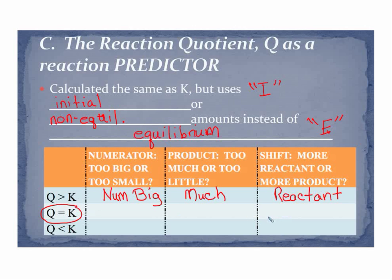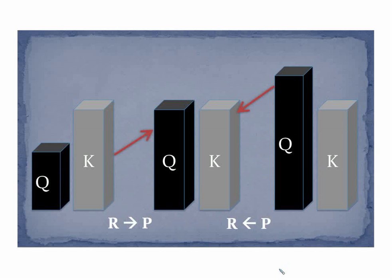If Q is equal to K, that means we are at equilibrium, and there would be no shift. Now, if Q is less than K, that means that my numerator is too small. Or conversely, my denominator is too big. My numerator is too small. I don't have enough product. I have too little product. And so I'm going to shift to make more product. So as the reaction proceeds to reach equilibrium again, or for the first time, depending on the situation, I'm going to consume reactant and form product.